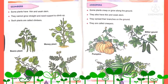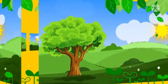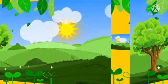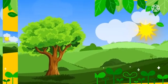Some plants also have a thin stem and they spread their branches along the ground. Such types of plants are called creepers. Examples are watermelon, pumpkin, and bitter gourd.